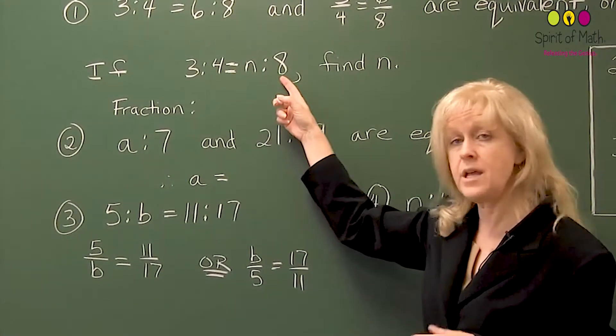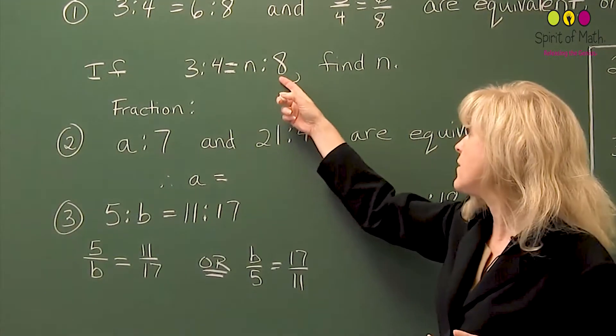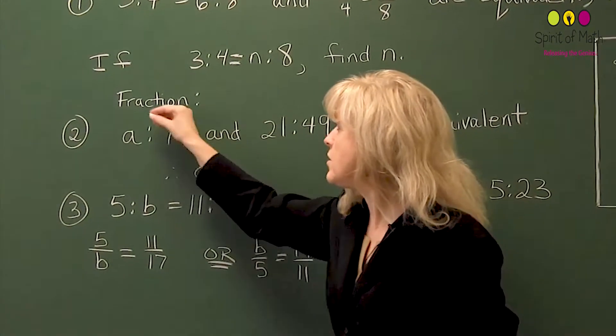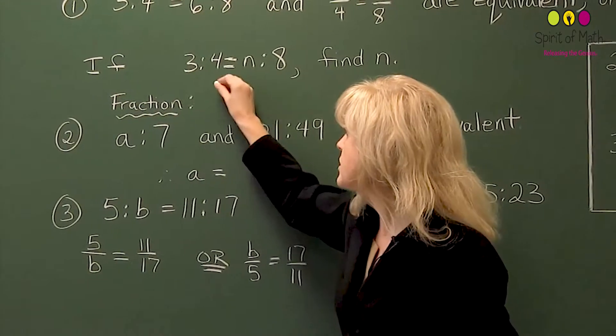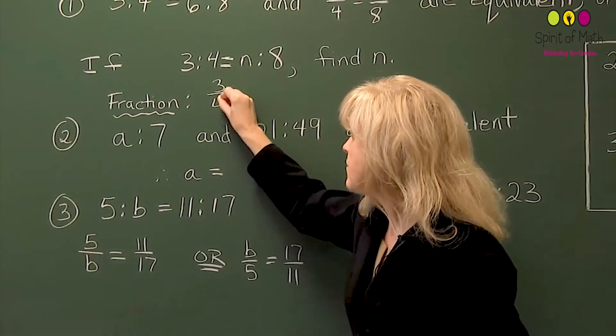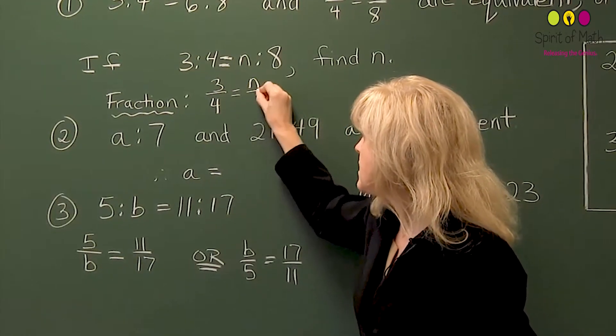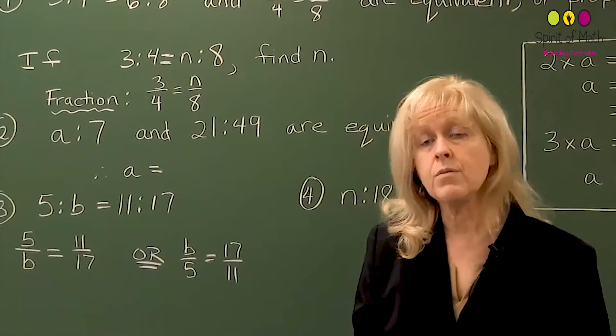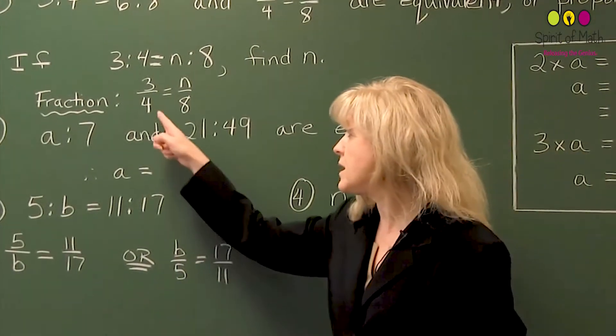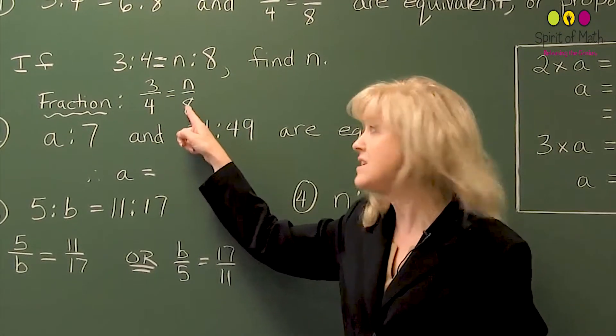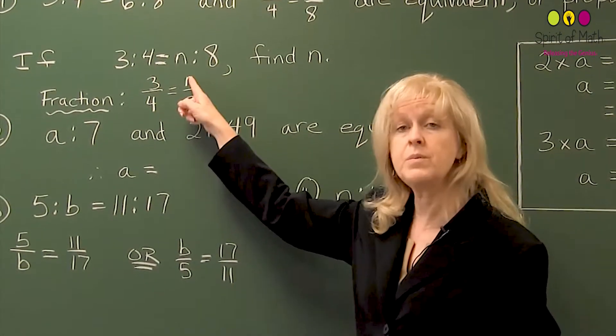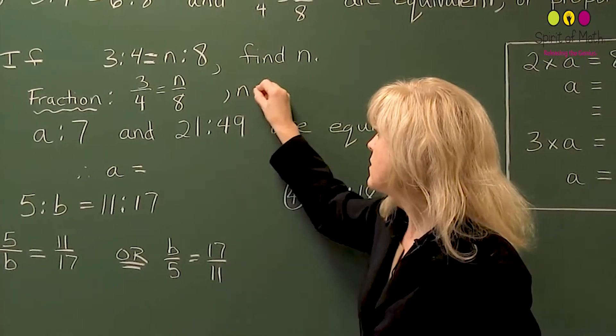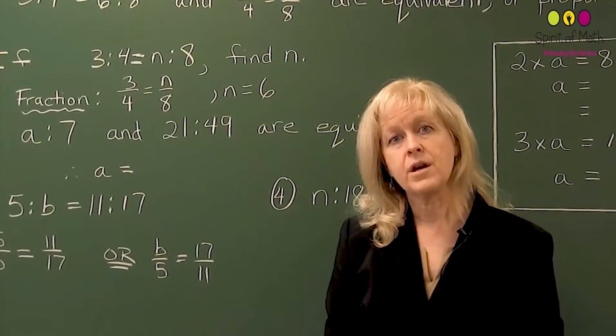If three to four equals n to eight, and this would be the type of question you get given, you want to find what n is. Well, the very first thing you do is you write it as a fraction. So three to four equals n to eight. And then you can solve for that. Well, very quickly, you can see here four times two is eight. So three times two would be six. And that would be your answer. So n would equal six.